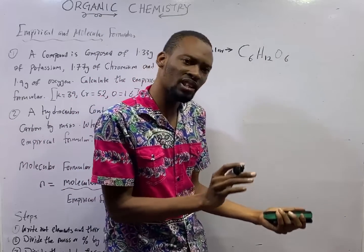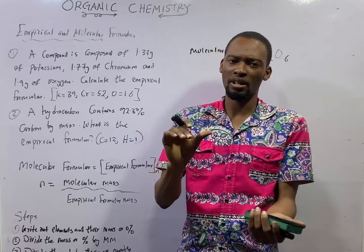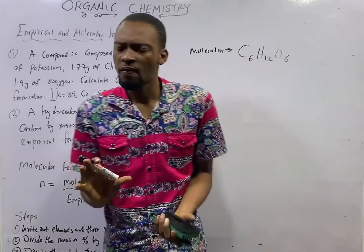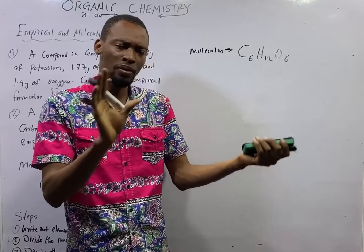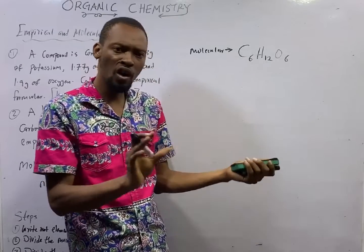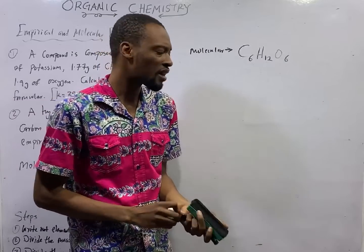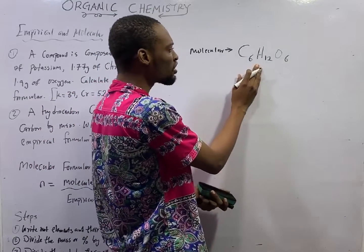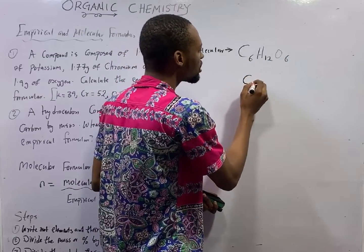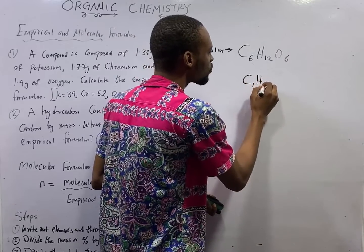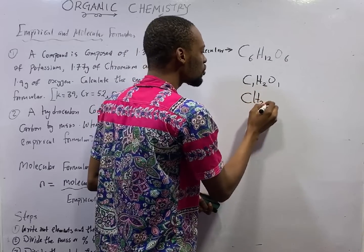Empirical formula, on the other hand, does not give us the exact molecules present in the compound. What it does is give you the simplest whole number ratio of the atoms that make up the compound. If we take glucose C6H12O6 and divide everything by 6, you will have C1H2O1, which is the same thing as CH2O.